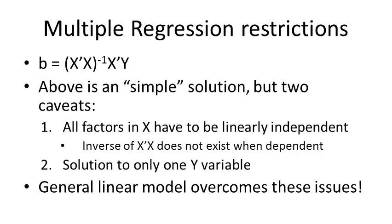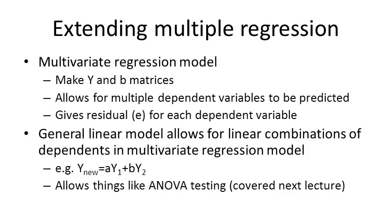For multiple regressions, b equals that solution I described, which is relatively simple in terms of matrix operations, but there are two caveats. First, all factors in X — the predictors — have to be linearly independent, meaning they can't be correlated with each other, because the inverse of X-transpose times X doesn't exist with dependent variables. Second, the solution can only have one y variable. The general linear model overcomes these two caveats, which is why it's preferred for this type of regression.